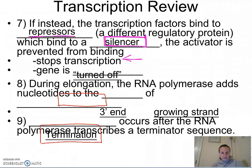During elongation, RNA polymerase adds nucleotides to the three-prime end of our strand. Then we have termination, which occurs after RNA polymerase transcribes a terminator sequence. Now we've got our pre-mRNA, and that pre-mRNA is going to be modified.